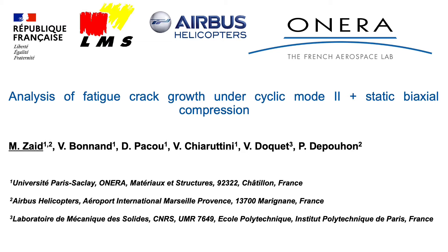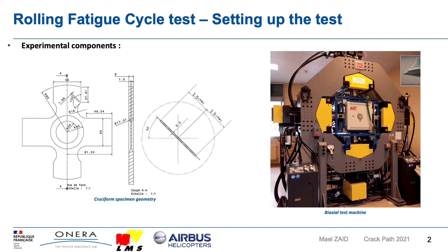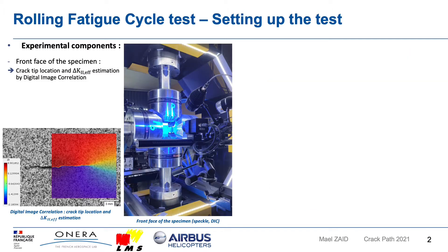The objective of the study is to provide an experimental methodology to perform shear mode fatigue crack growth under an additional constant biaxial compression. Experimental tests were performed using a cruciform specimen of bearing steel with an initial notch oriented at 45 degrees. A biaxial machine was used to load the specimen with two hydraulic cylinders controlled independently. Stereo digital image correlation was used to visualize displacement fields over the entire specimen to measure in-plane and out-of-plane opening and sliding displacements in order to find the crack tip location and estimate the stress intensity factors.